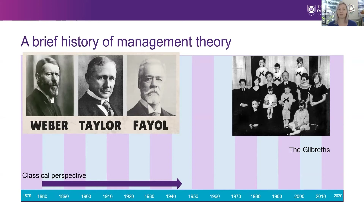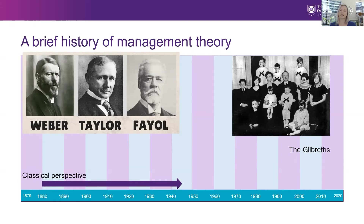Taylor insisted that improving productivity meant that management itself would have to change, and that the manner of change could be determined only by scientific study — hence the label 'scientific management.' Taylor suggested that decisions based on rules of thumb and tradition could be replaced with precise procedures developed after careful study of individual situations.